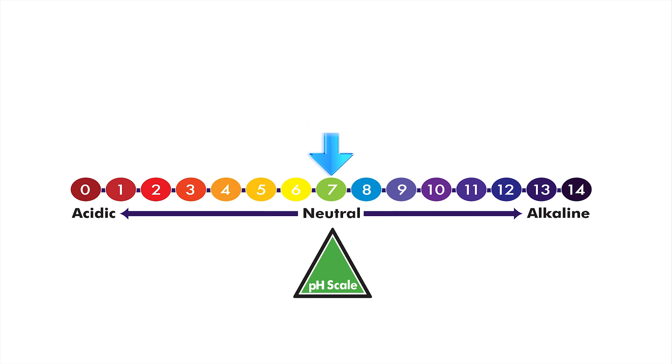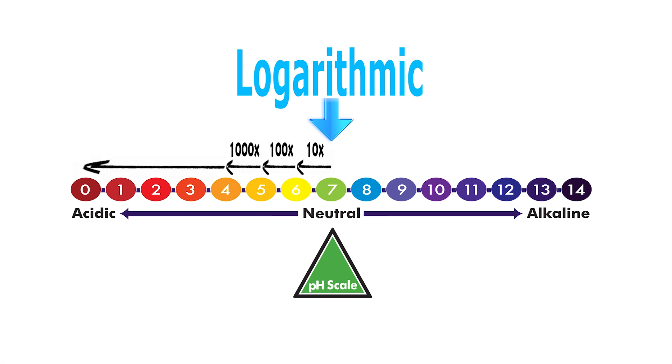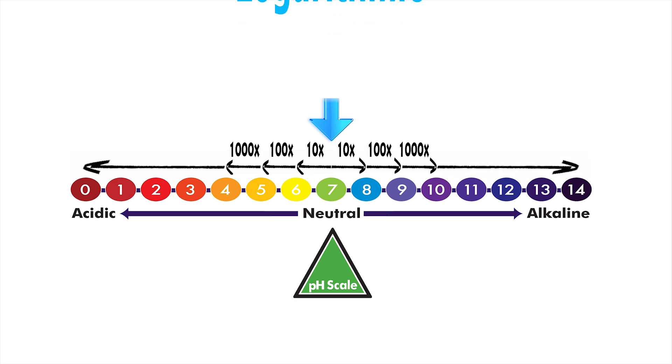Note that a slight change in pH measures a significant increase or decrease because this scale is logarithmic. To illustrate, 6 is 10 times more acidic than 7, 5 is 100 times more acidic, 4 is 1000, and so forth. This applies to the alkaline side as it increases tenfold in alkalinity as well.